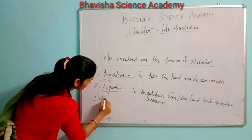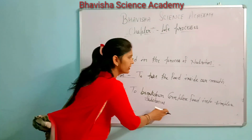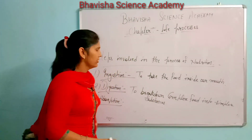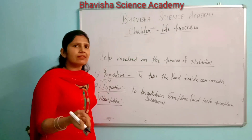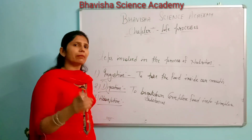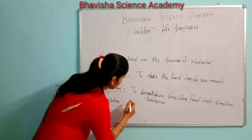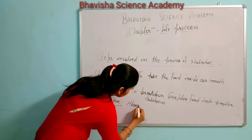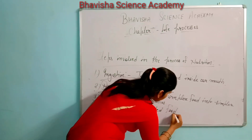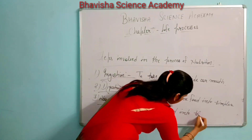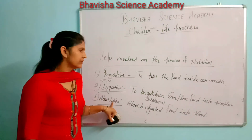The third step is absorption. Whatever we eat, that is broken down into smaller pieces, and it will then be absorbed into our blood. To absorb digested food into the blood is known as absorption.